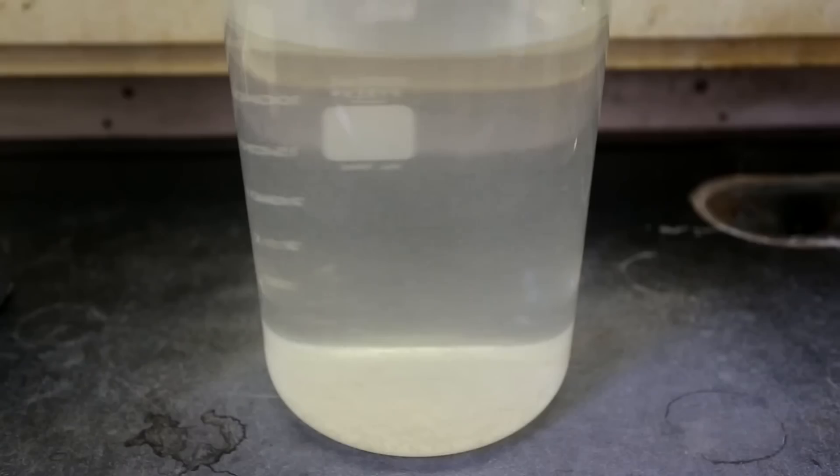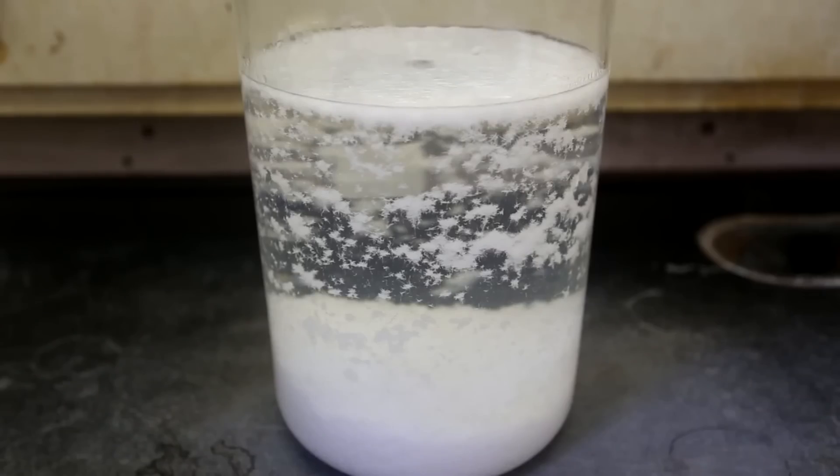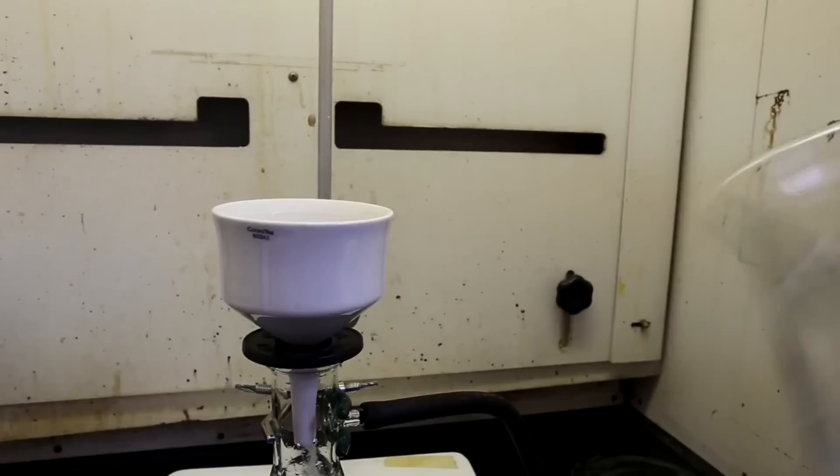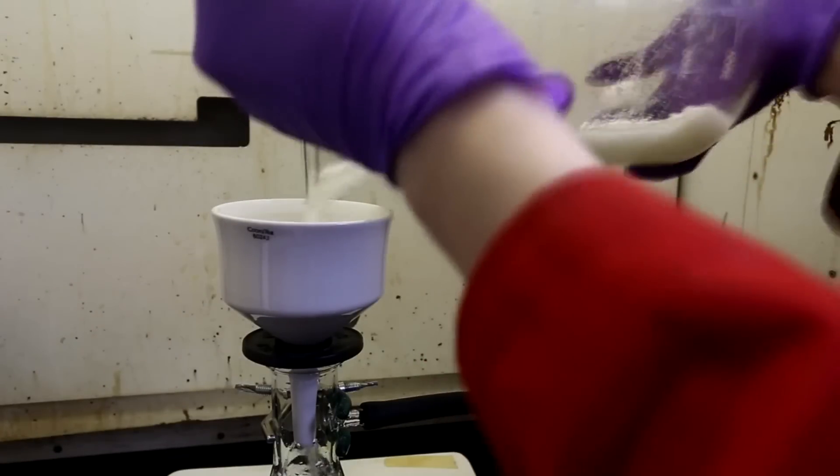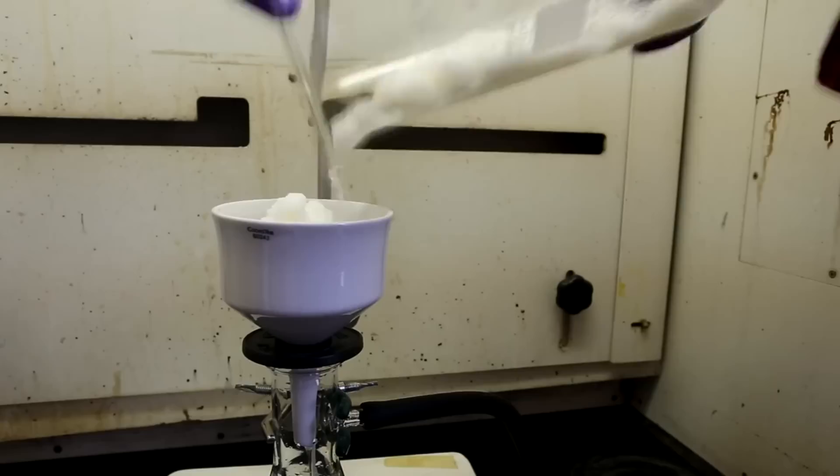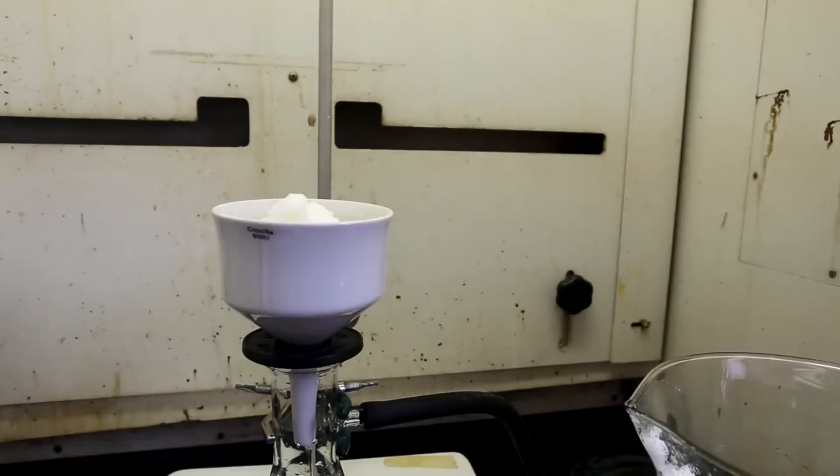Because salicylic acid is so insoluble in water, it took about 4 liters of boiling water to dissolve it all. The crystallized product was filtered off using vacuum filtration and left to dry in a 120°C oven overnight.